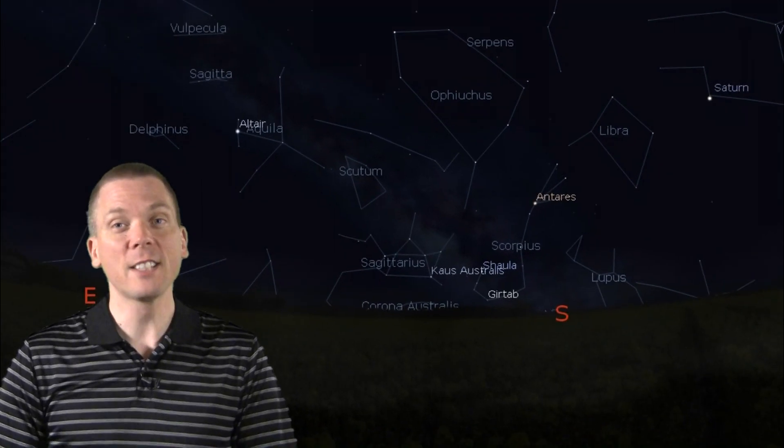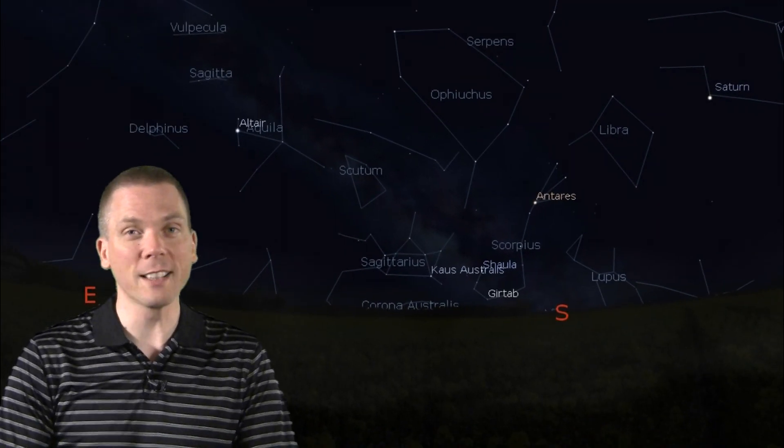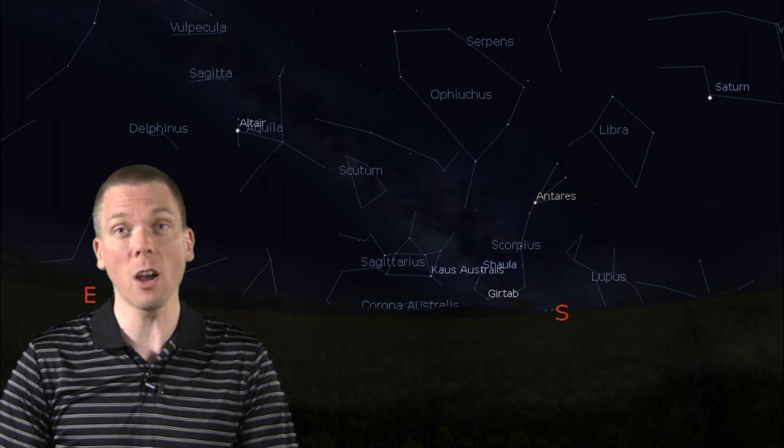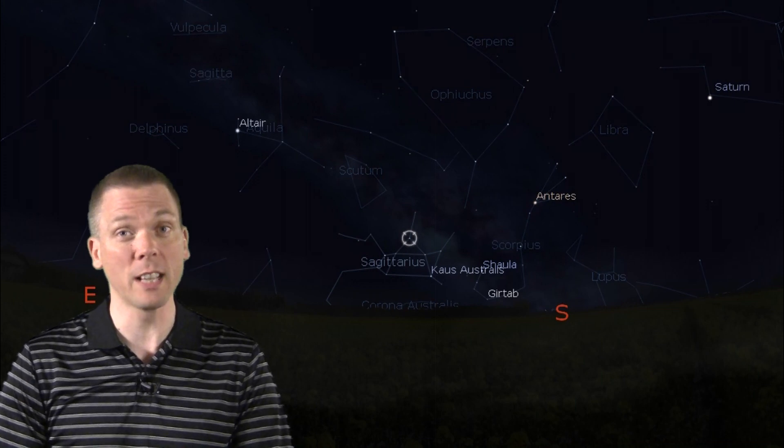To the south are perhaps some of the best highlights of the summer sky, Sagittarius the Archer and Scorpius the Scorpion. The former constellation has an asterism within it often referred to as the Teapot, as there are eight stars that resemble such a shape.